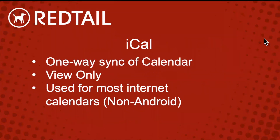Let's dive into iCal. If you choose to sync iCal — and this is actually what I tend to use personally — anyone who uses iCal uses the Redtail calendar itself as their main calendar. Everything they add, remove, or change is managed out of Redtail. iCal is a one-way, view-only sync of the calendar. If I choose to sync it with my phone or an internet calendar, it only shows changes made on Redtail's side. If I add something to the internet calendar, it will not add back to Redtail.